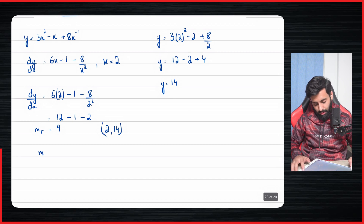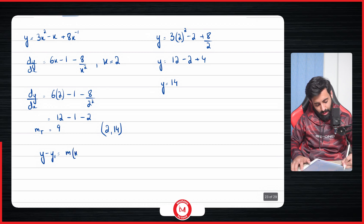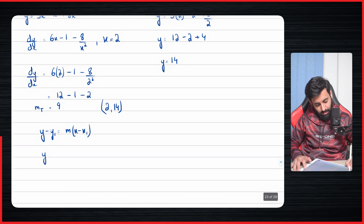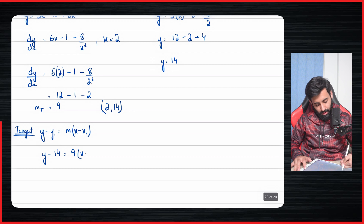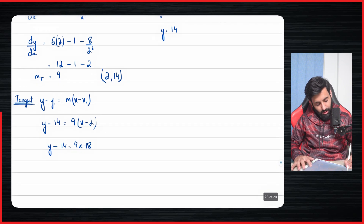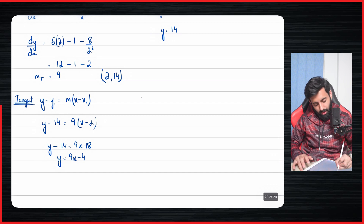Using y − y1 = m(x − x1) for the tangent: y − 14 = 9(x − 2), which simplifies to y − 14 = 9x − 18, and so the equation of the tangent is y = 9x − 4.